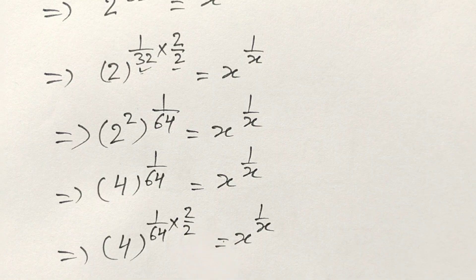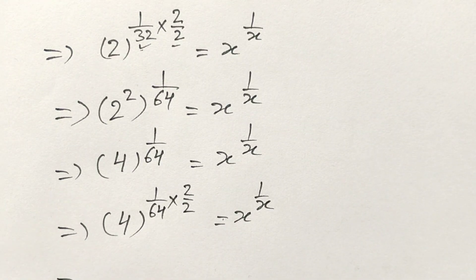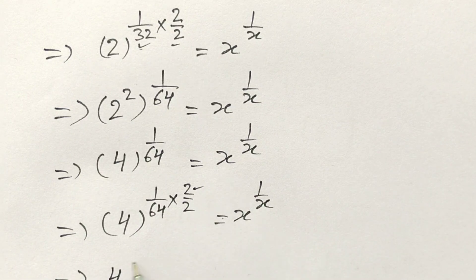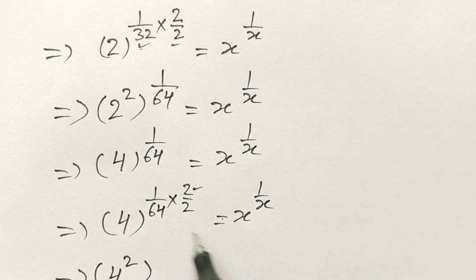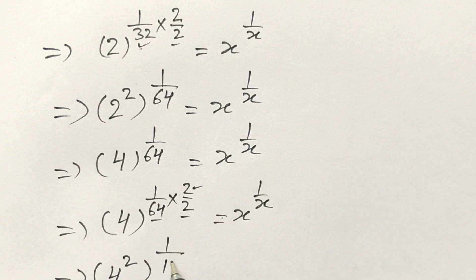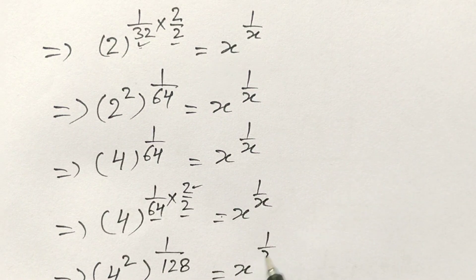Again, 4 to the power 1 over 64 is equal to x to the power 1 over x. If we multiply by 2 over 2 again — 4 squared is 16 — so 16 to the power 1 over 128 is equal to x to the power 1 over x.